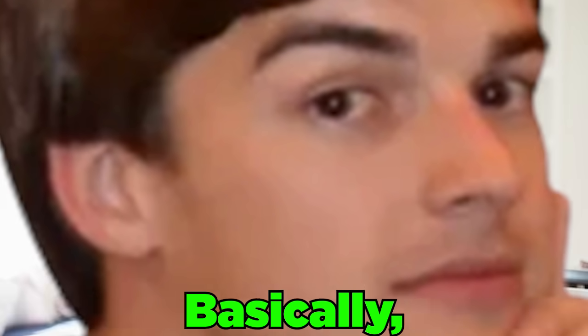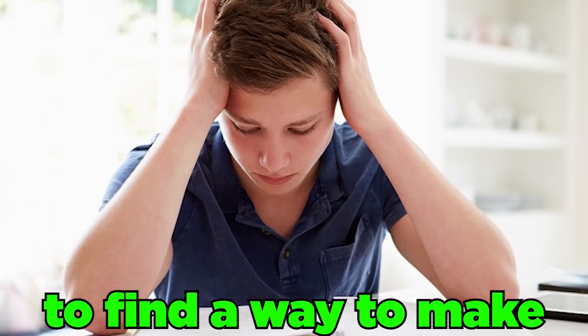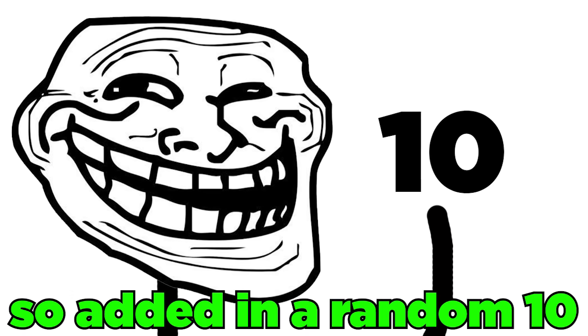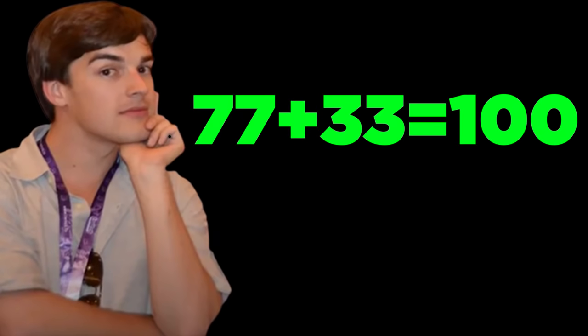Well, I think I have the answer. Basically, the government needed to find a way to make the school curriculum even more torture for the students, so they added in a random 10 to the equation. So 77 plus 33 was really 100 all along.